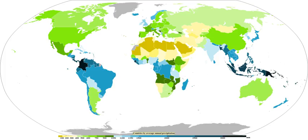Increasing temperatures tend to increase evaporation which leads to more precipitation. Precipitation has generally increased over land north of 30° north from 1900 to 2005, but has declined over the tropics since the 1970s. Globally there has been no statistically significant overall trend in precipitation over the past century, although trends have varied widely by region and over time. Eastern portions of North and South America, Northern Europe, and Northern and Central Asia have become wetter. The Sahel, the Mediterranean, Southern Africa, and parts of Southern Asia have become drier.